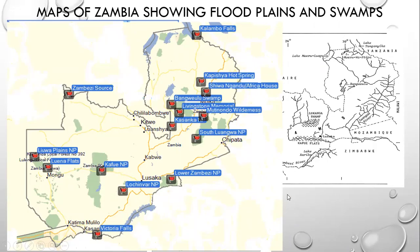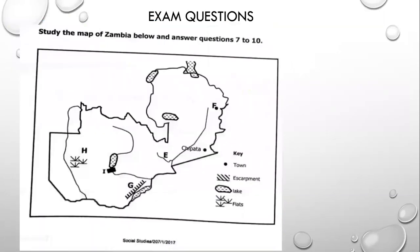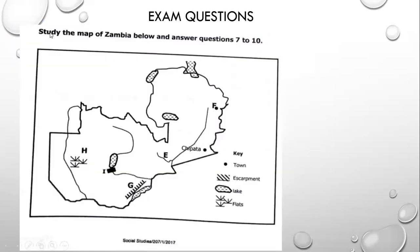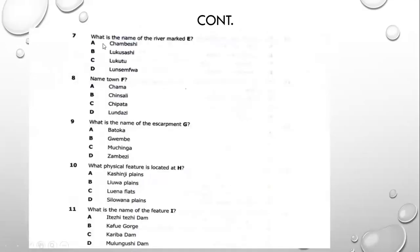Now let's go straight into exam questions. This is an extract from the 2017 Paper 1 Social Studies. On this map, we have features H, I, G, E, and F, with a key indicating what each feature means. Question 7 asks: what is the name of the river marked E?